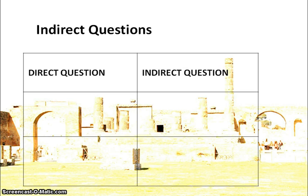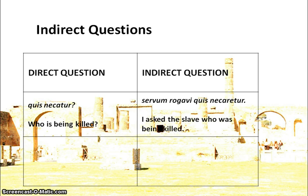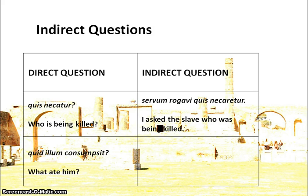For example: direct question quis necatur — 'who is being killed?' — necatur is present tense, so in our indirect question we expect the imperfect subjunctive: servum rogavi quis necaretur. Necaretur is our present active infinitive necare plus personal endings -tur. So: 'I asked the slave who was being killed' — quis is our interrogative vocab and rogavi is our above-the-neck verb.